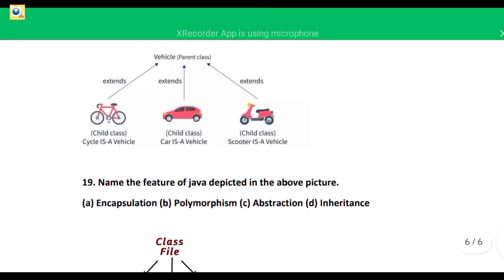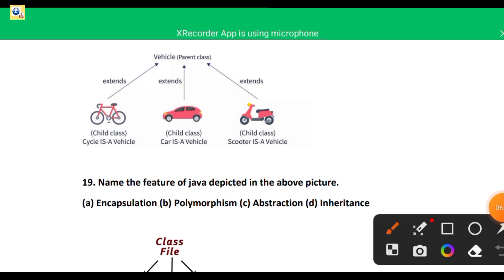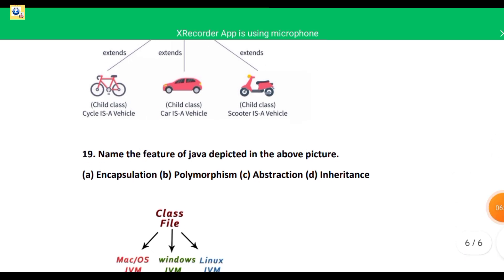The next question: there is a parent class named Vehicle with child classes Cycle, Car, and Scooter. It is very simple — there is a parent class and child classes, so the correct feature of Java depicted is inheritance.